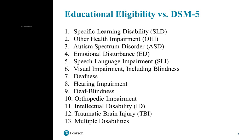Here is a list of educational eligibility categories — the 13 areas through which a student can qualify for services under IDEA. IDEA requires public schools to provide special education to eligible students, but not every kid who's struggling will qualify; their performance has to be adversely affected by a disability in one of these 13 categories. The most common is specific learning disability, where about 34% of students in special education qualify. It's an umbrella term for a wide range of learning challenges affecting a child's ability to read, write, listen, speak, reason, or do math.